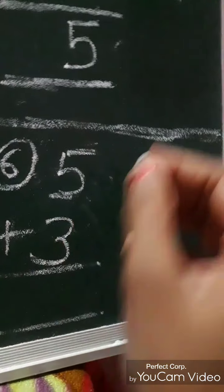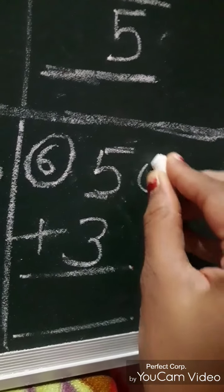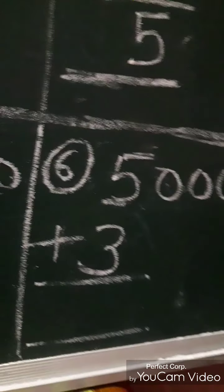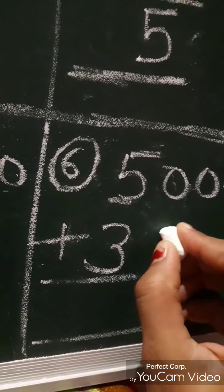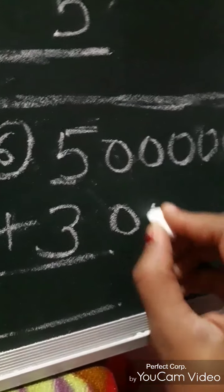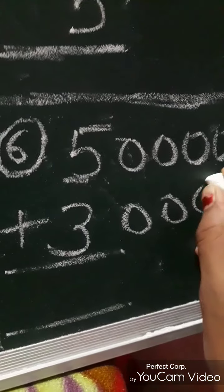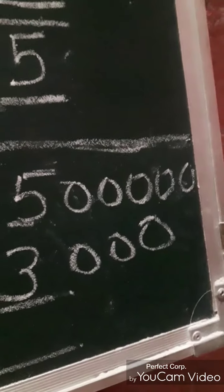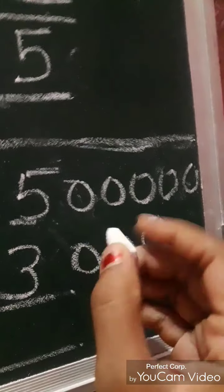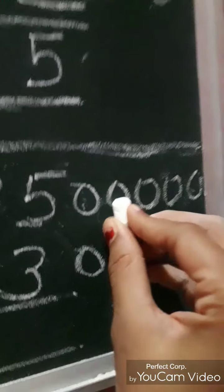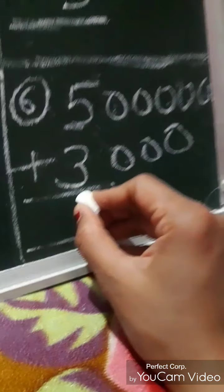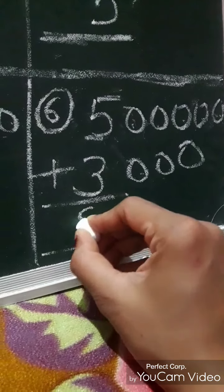Now we move to the last sum. Number five is written upside, so we draw five circles. Downside number three is written, so we draw only three circles. After drawing all the circles, we count them together: one, two, three, four, five, six, seven, eight — so for this sum, eight is the answer.